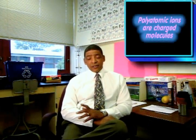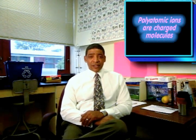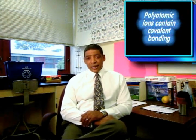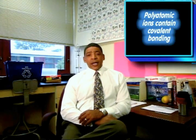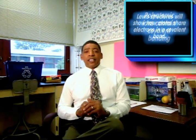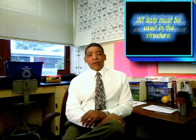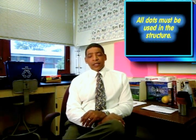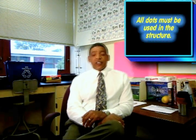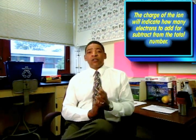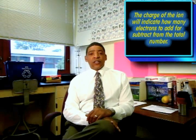Polyatomic or molecular ions are charged molecules consisting of two or more atoms that are covalently bonded together. When writing Lewis structures for polyatomic ions, just remember: all available valence electrons must be accounted for. Additionally, adjustments to the total number of valence electrons must be made according to the charge of the particular ion.